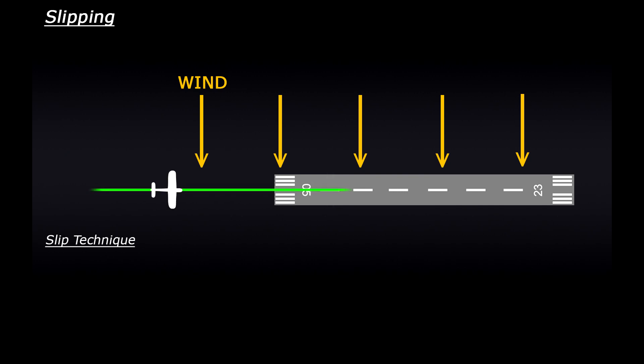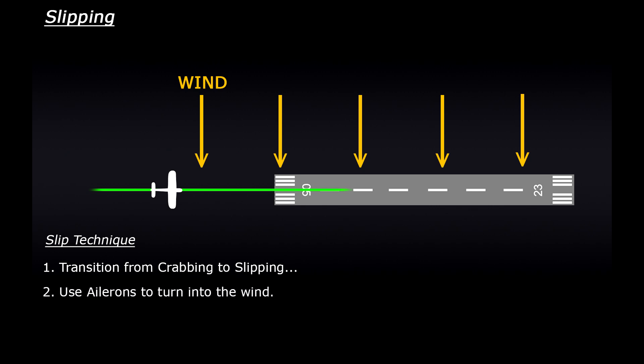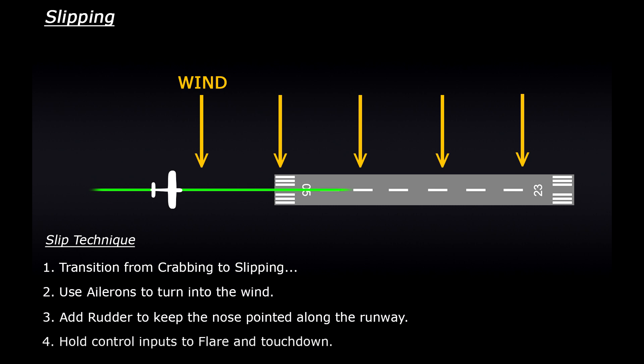The technique is pretty much the same. When you're a couple of miles out, transition from crabbing into slipping. To do this, use the ailerons to turn into the wind — again, just a slight movement. The third step would be to use the rudder to control the direction of the nose, keeping it in line with the runway. Then all you would do is simply hold these inputs, continue descending until you flare, and land without changing your aileron or rudder input.